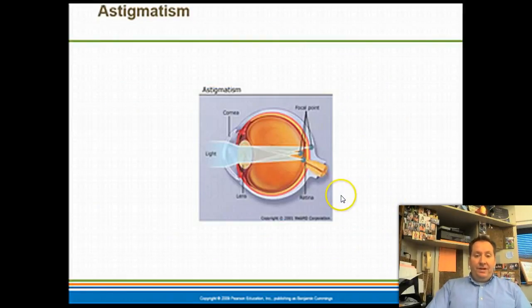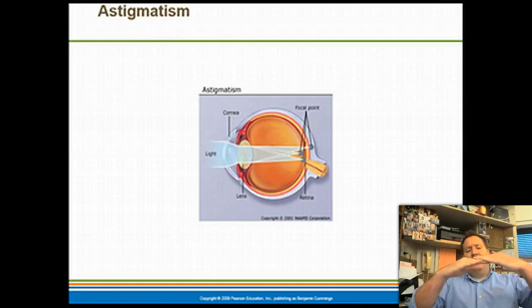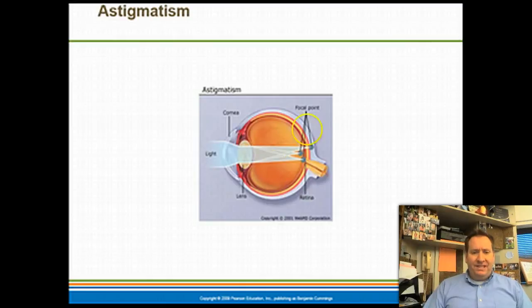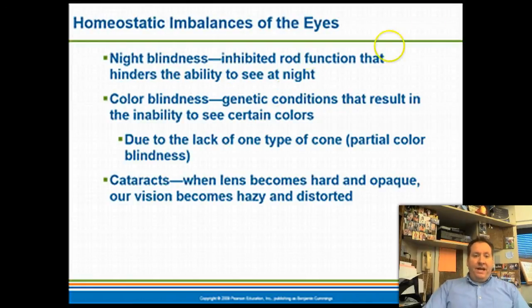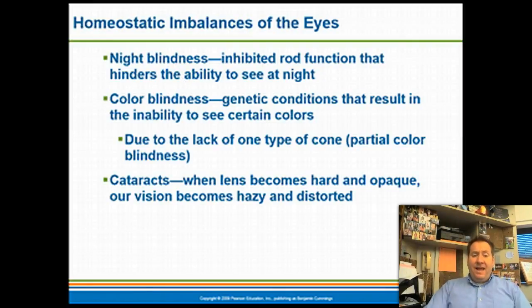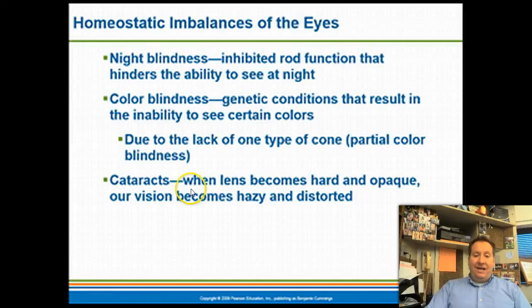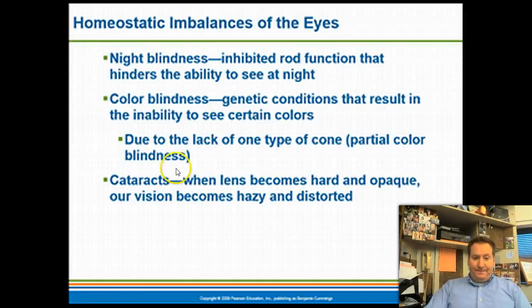An astigmatism is a misshapen cornea that produces multiple focal points of light, causing blurred or distorted vision. People with astigmatism often get a contact lens that molds to the surface of the eye to prevent light from scattering. The major eye disorders include night blindness — inhibited rod function due to poor diet lacking nutrients found in vegetables like carrots — color blindness from lacking a cone type, cataracts from an opaque lens, and glaucoma from increased pressure inside the eyeball.